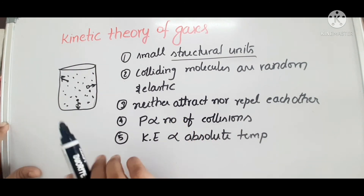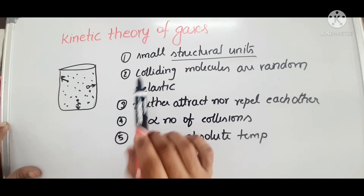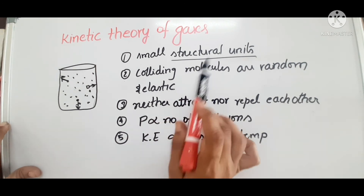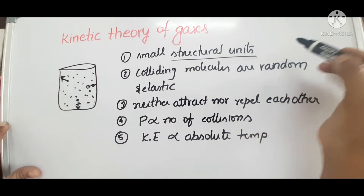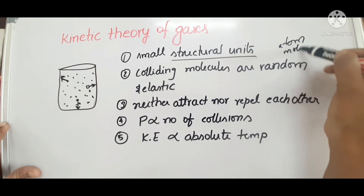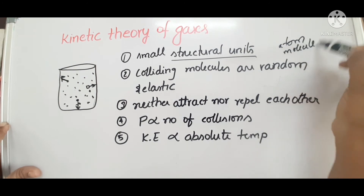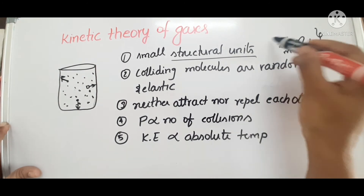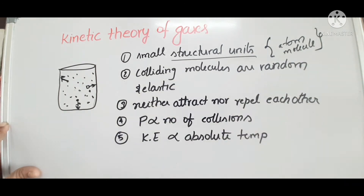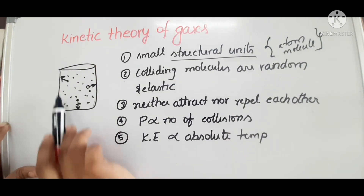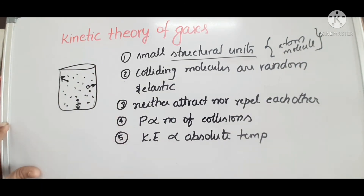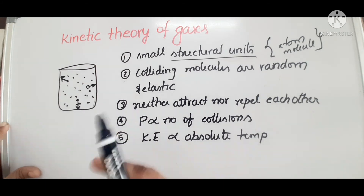The first postulate is gas is made up of small structural units. Structural units are atoms or molecules. The volume of those structural units can be negligible. Next, gas molecules collide randomly and rapidly.